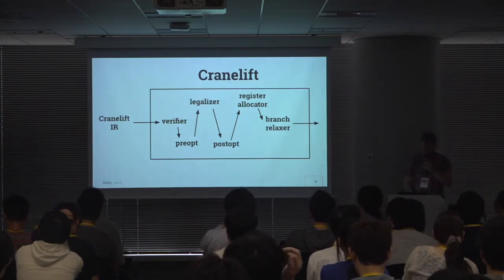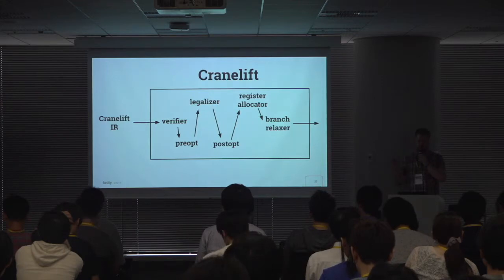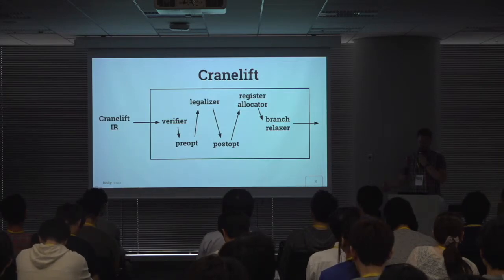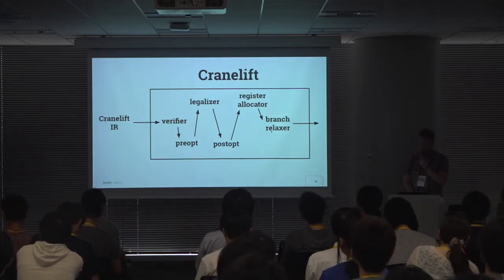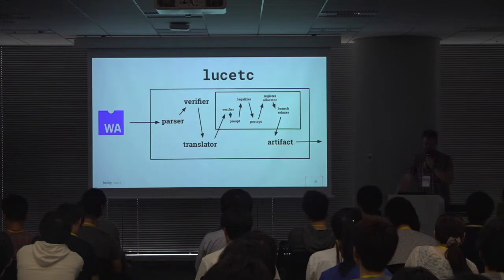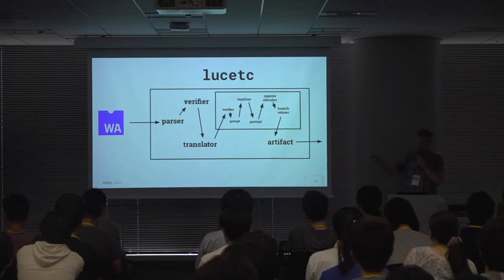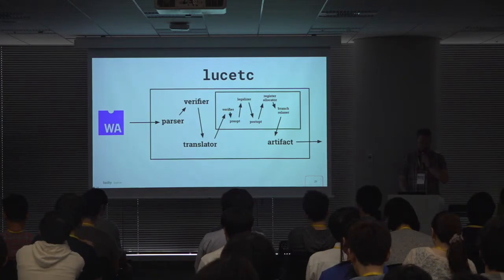Once satisfied with optimization results, we run the register allocator, which takes all the abstract symbolic variables and assigns them into machine registers or spills them onto the stack. Finally we end up in the branch relaxation phase, which lays out where the program ends up in memory. So if anyone ever tells you that compilers are composed only of lexing, parsing, and codegen, just show them this picture — modern compilers are very complex pieces of software.